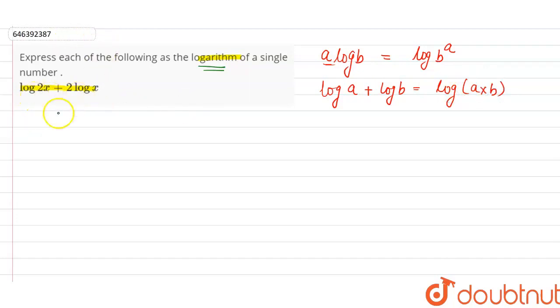According to the question, here we have log 2x as it is, plus 2 log x. What do we have to write? By using the first formula: log x square.